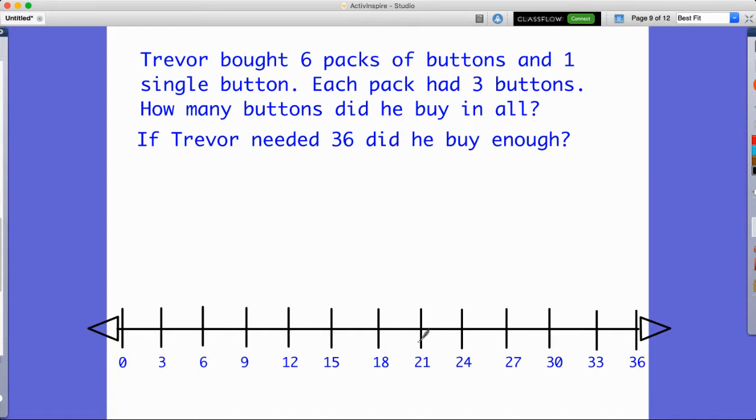So we actually see that this skips threes. And so this tells me that these can represent the packs of buttons. So like this would be a pack, another pack. So whatever your number line, whenever you see it, this probably represents how many are in the groups. So if he bought six, I can just count this.